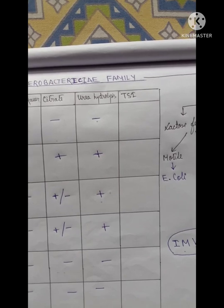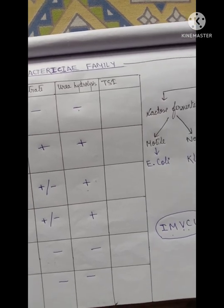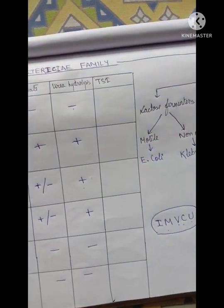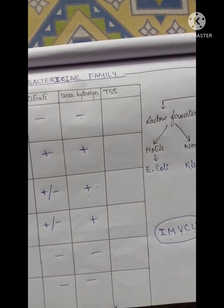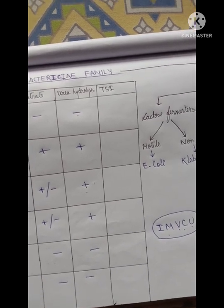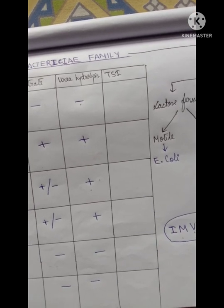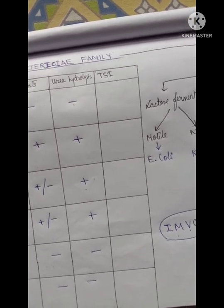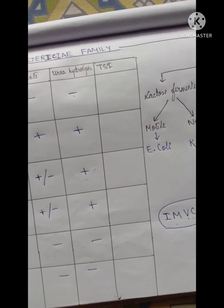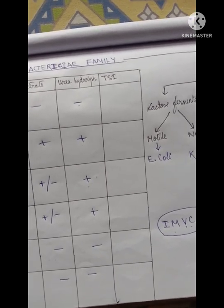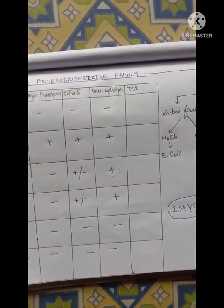Now coming to the TSI test. Regarding the TSI test, you have to first know what the TSI test is — I will be making a separate video for that. The components of the TSI test are: how many sugars each bacteria can ferment — whether it can ferment Glucose, Mannitol, and Lactose — then whether it produces Acid/Acid (AA) or Alkaline/Acid (KA), whether gas will be produced or not, and whether H2S will be produced or not.